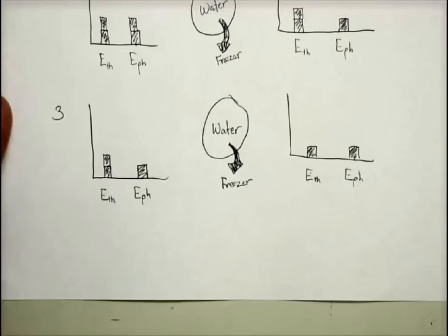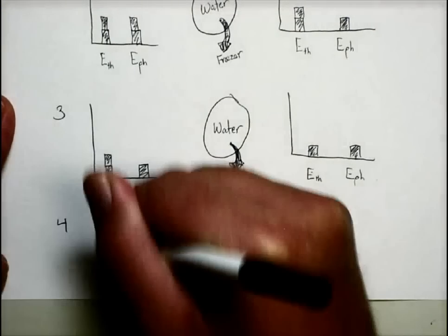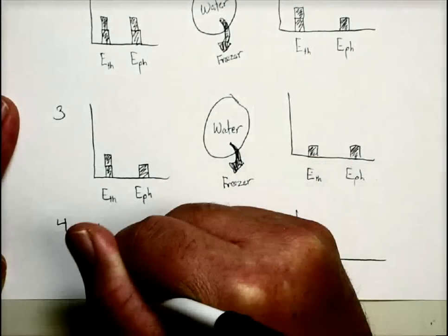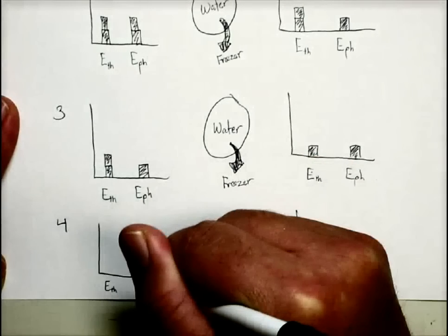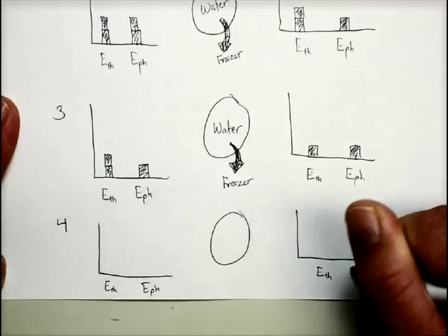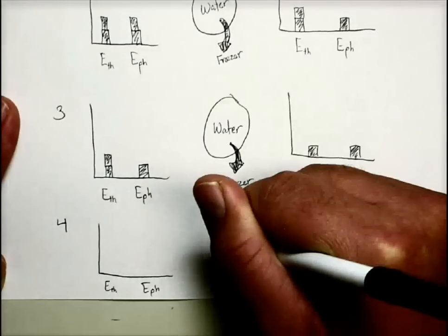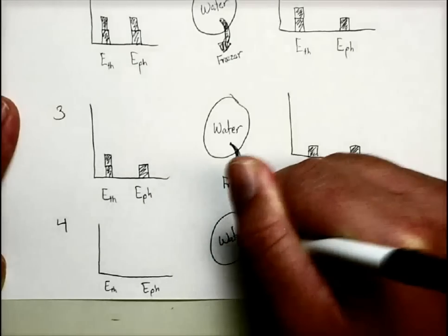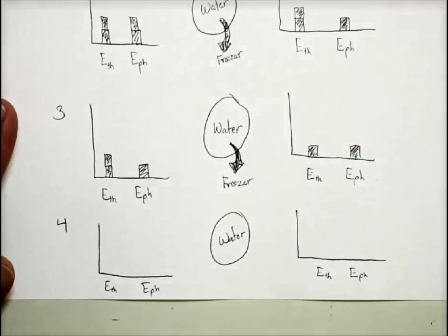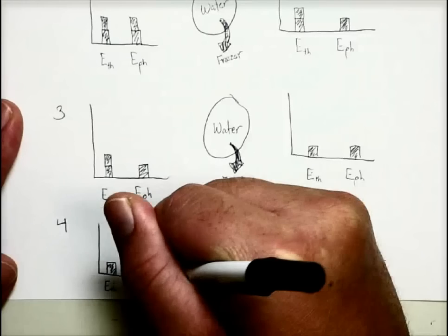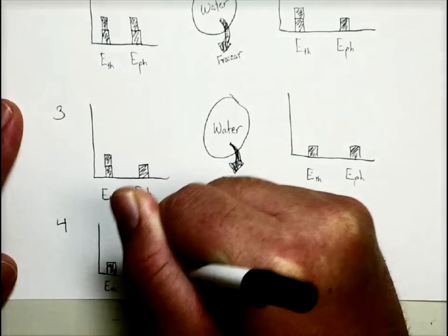Now let's look at section 4, which I'll squeeze in right at the bottom of this sheet of paper. Again, our thermal energy, our phase energy for both. And again, we're dealing with water. It's ice this time. But it's still made of the same particles.